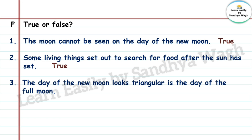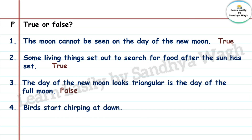3. The moon looks triangular on the day of the full moon — False, the moon is completely round on the full moon day. 4. Birds start chirping at dawn — True, birds chirp and become active at early morning.